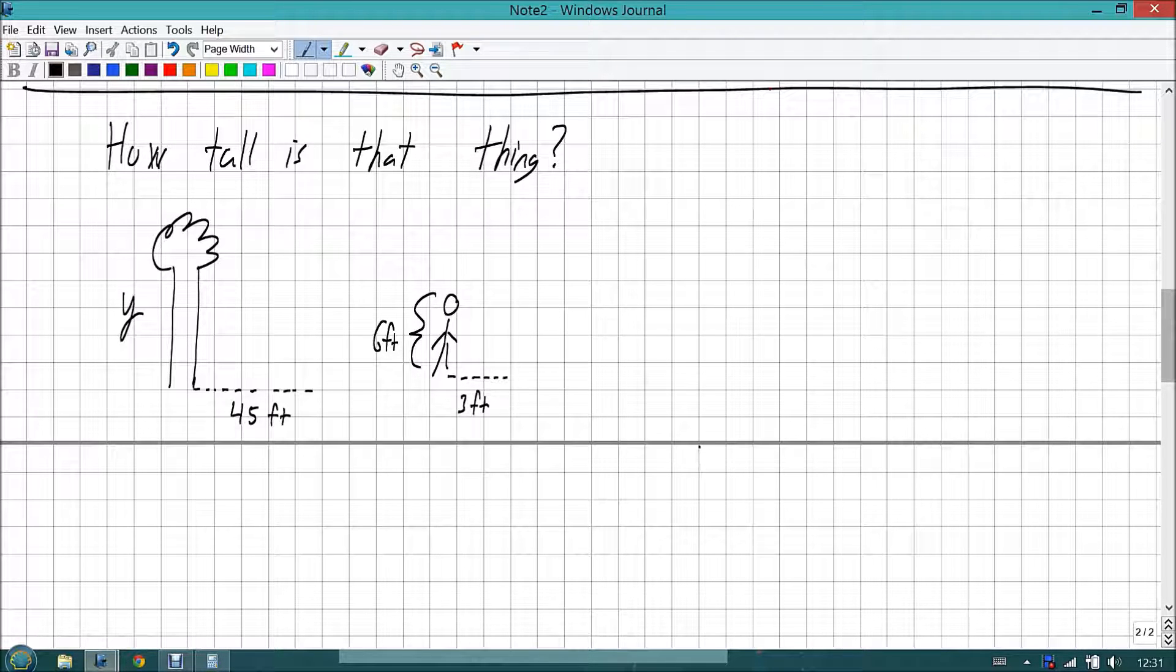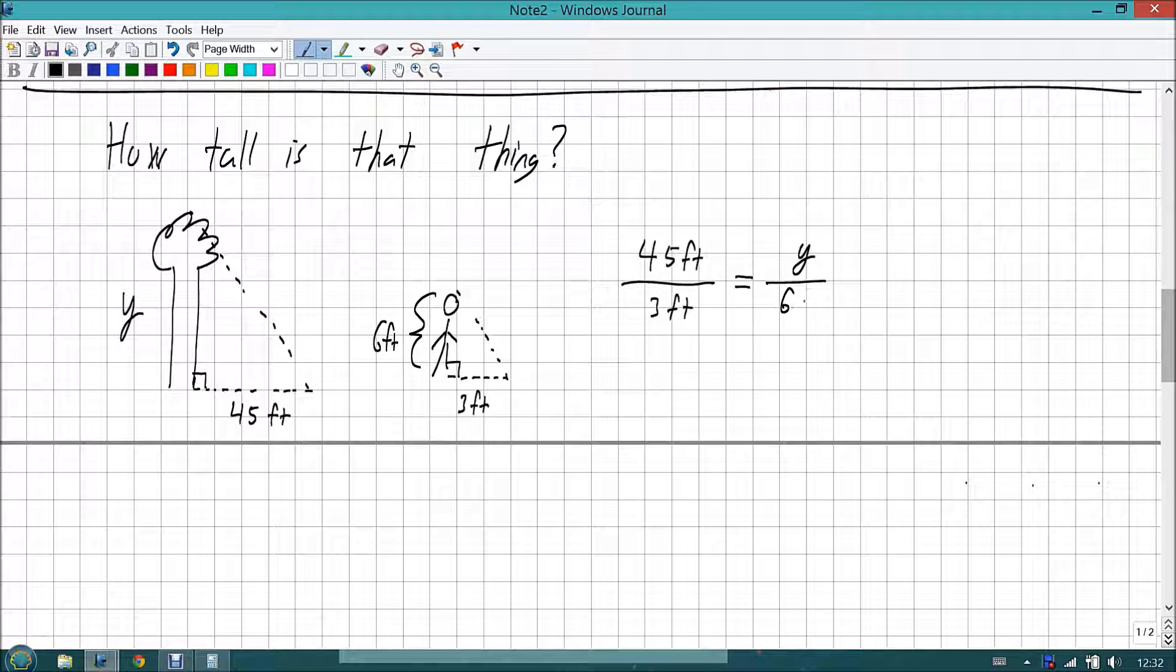Well, to figure that out we have similar shapes, right? If we're looking at it the sun kind of shines down and causes us to have a little bit of a triangle. When we're standing straight up we can assume that we have a nice right angle. And so we have two similar triangles. And when we have similar triangles we can use that ratio thing again, right? So we have 45 feet is the length of the shadow of the tree. 3 feet is the length of the shadow of the person. Well, that has to be equal to how tall the tree is, which is unknown, in comparison to how tall the person is, which is 6 feet.